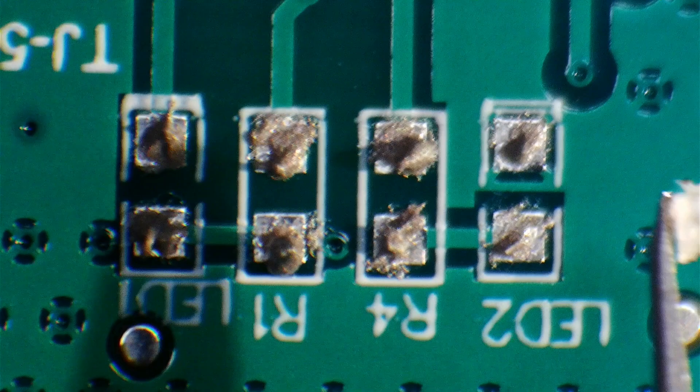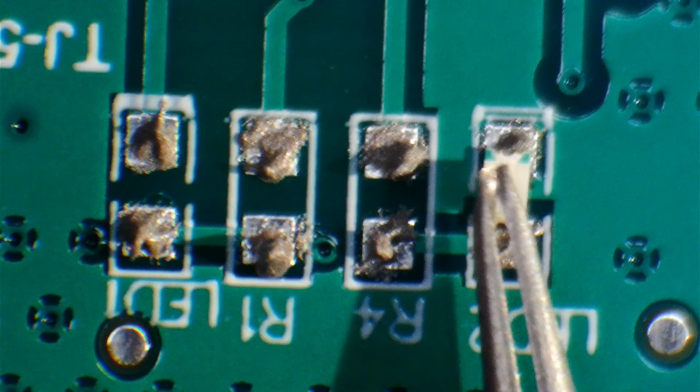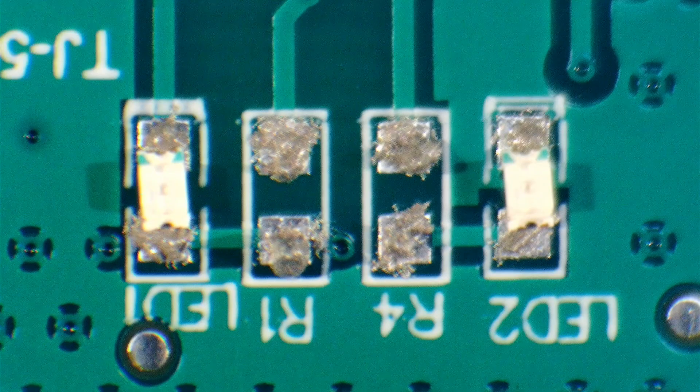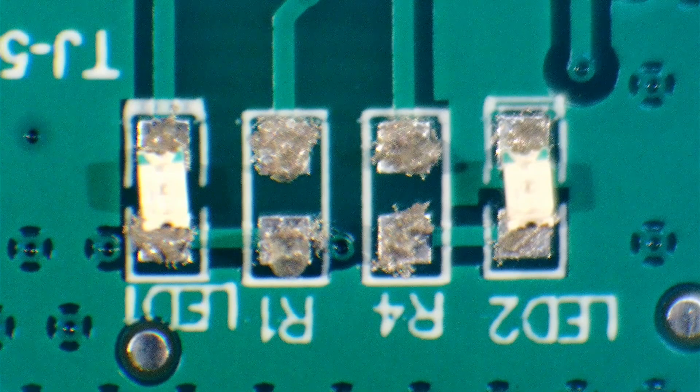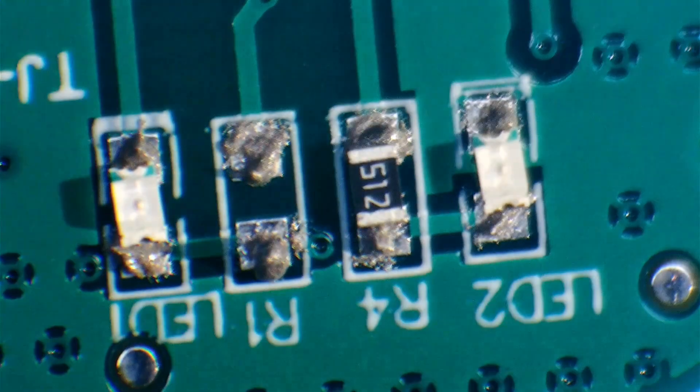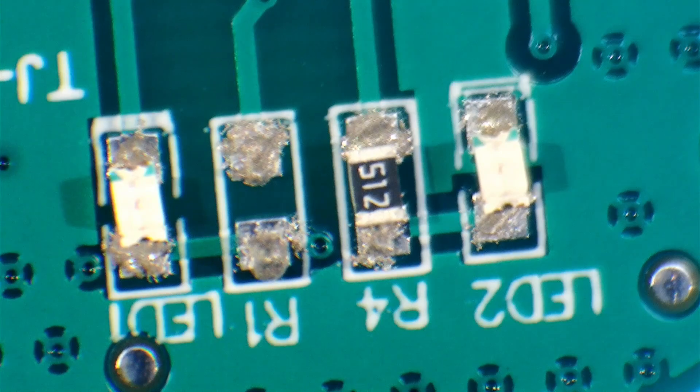The diodes, ICs, and electrolytic capacitor will matter which direction they are placed. Typically, the cathode on the diodes has a thicker line in the silkscreen, and for these LEDs, pin 1 is the cathode. Resistors and ceramic capacitors can be placed in either direction.